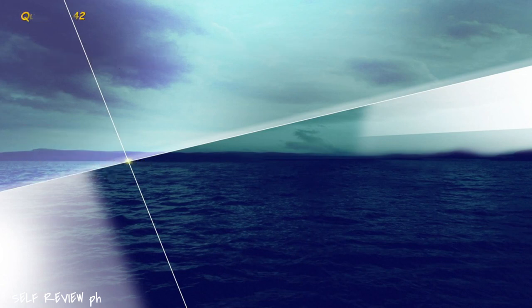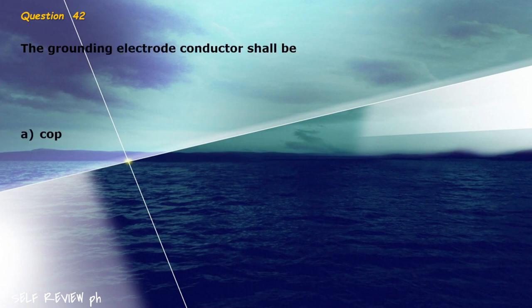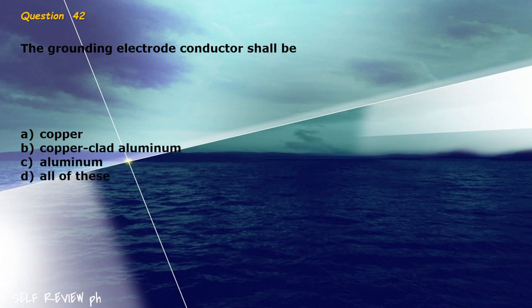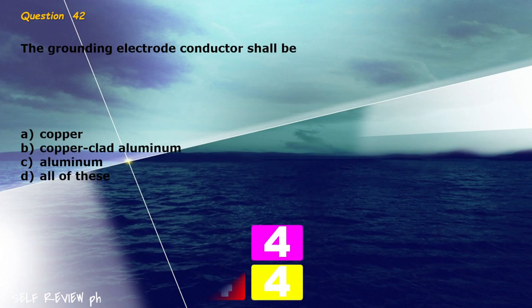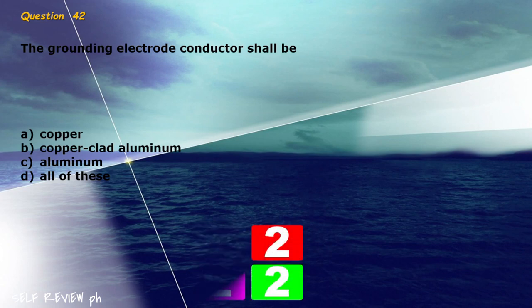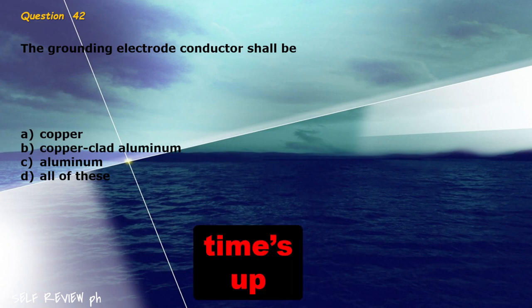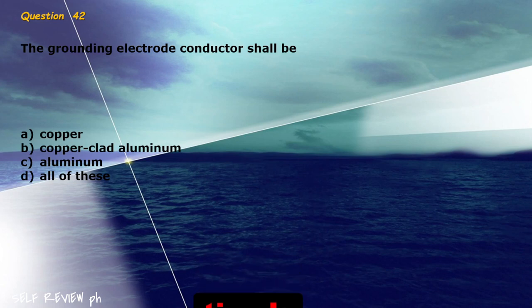Question 42: The grounding electrode conductor shall be blank. A) copper, B) copper clad aluminum, C) aluminum, D) all of these. The correct answer is letter D, all of these.